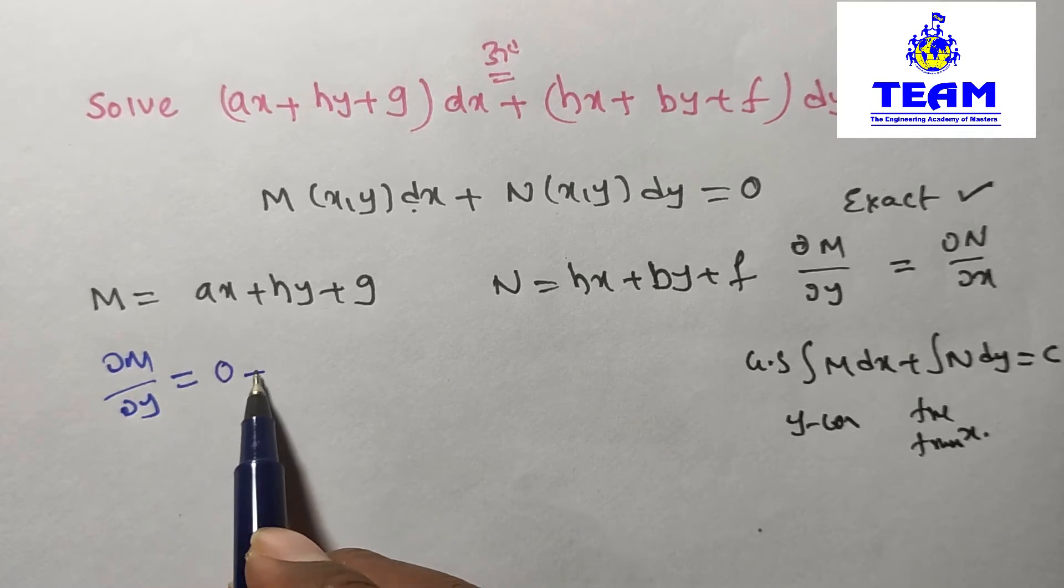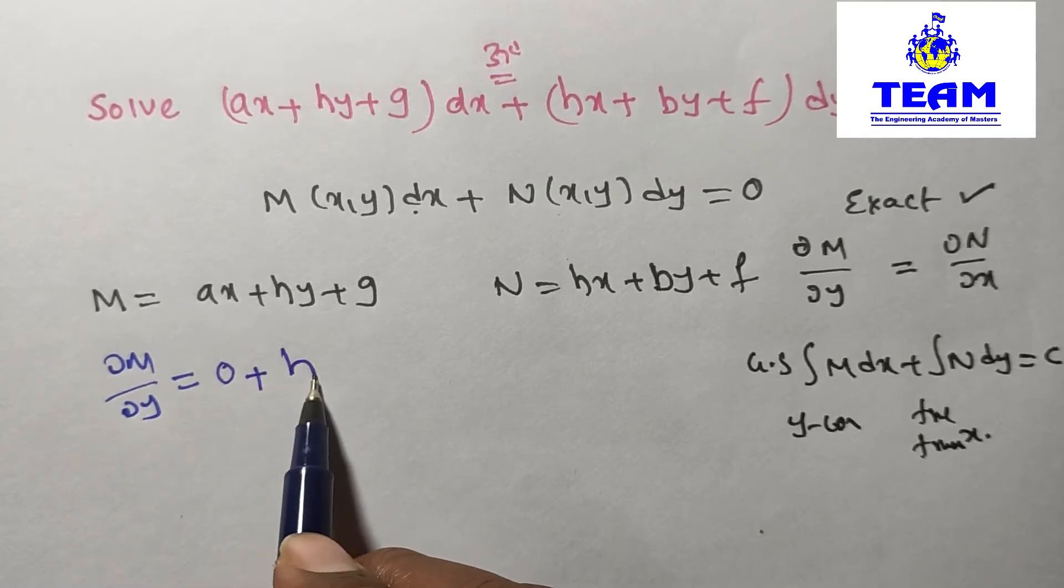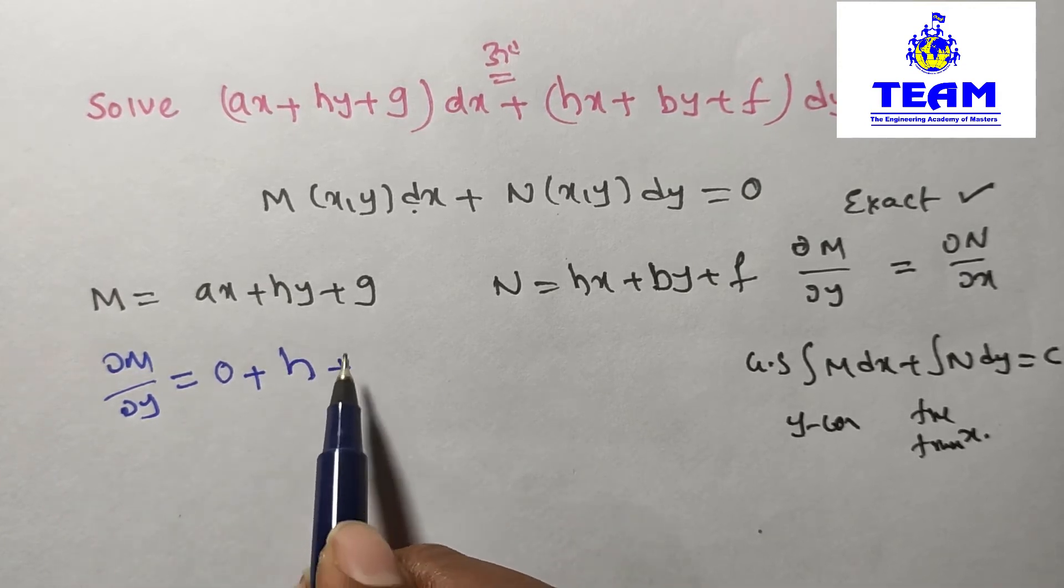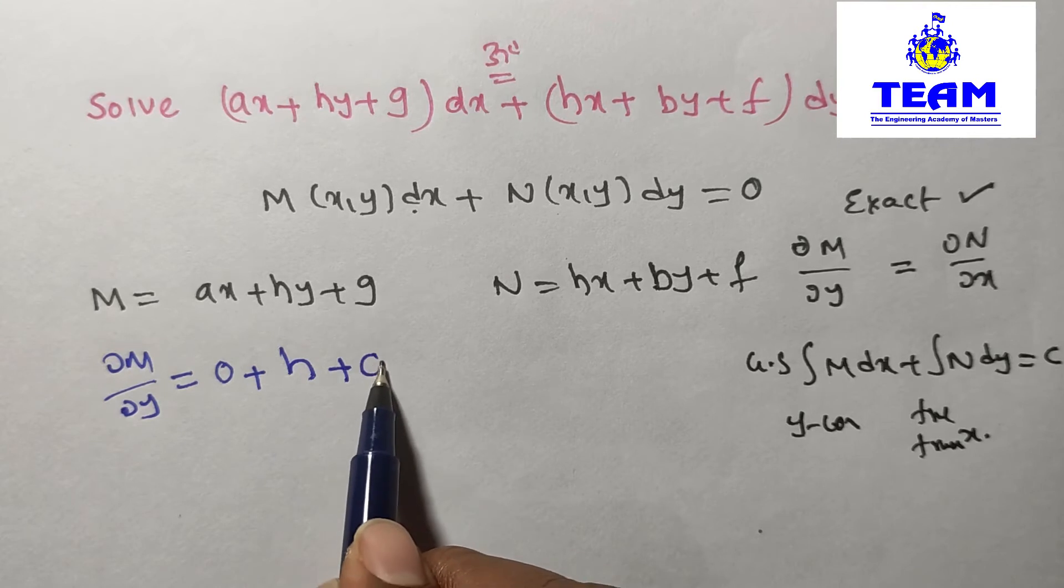Constant derivative is zero, plus h is already a constant. The y derivative with respect to y is 1, so h times 1 is h, plus g is a constant, so its derivative is zero.